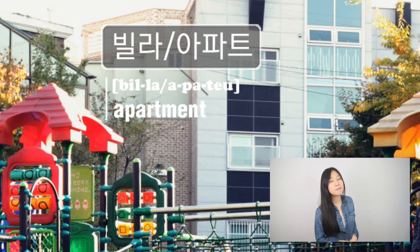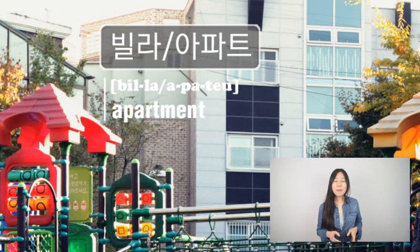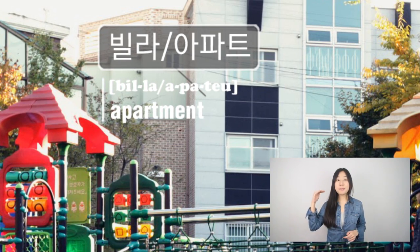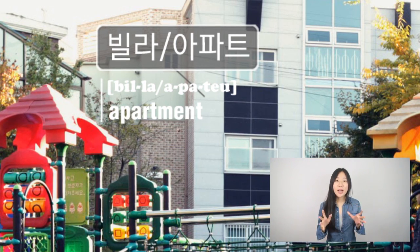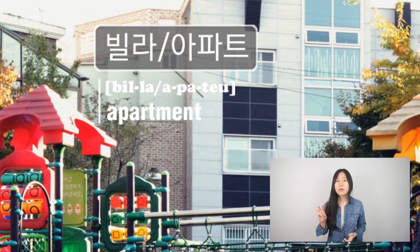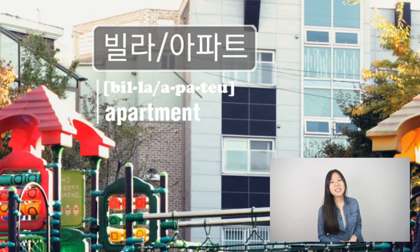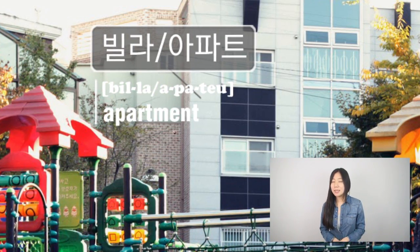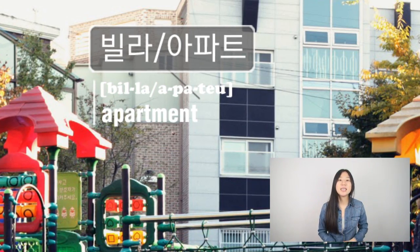If I think of 빌라, it's relatively low. I looked it up and it turns out if it's less than 5 storeys, it's 빌라. If it's over 5 storeys, it's 아파트. In this photo, I think we are looking at a 빌라 — a 3 or 4 storey building. So to sum it up, apartment in Korean is 빌라 or 아파트, depending on how tall the building is.